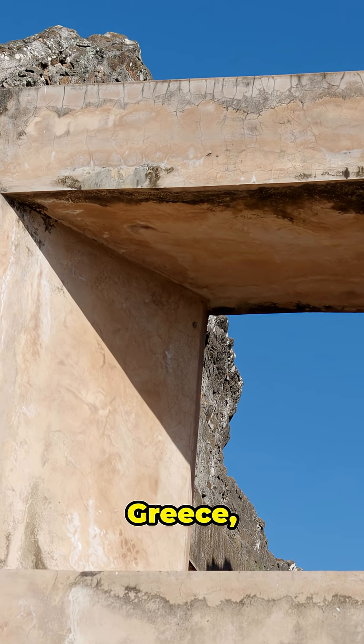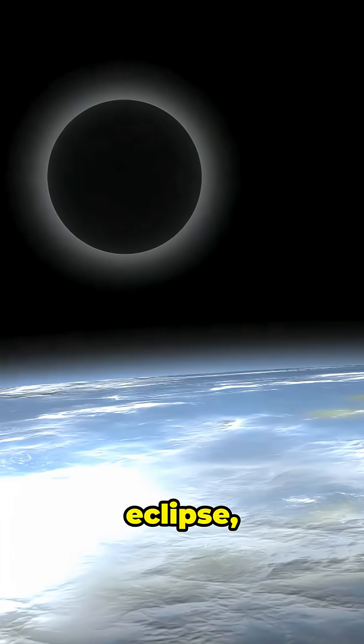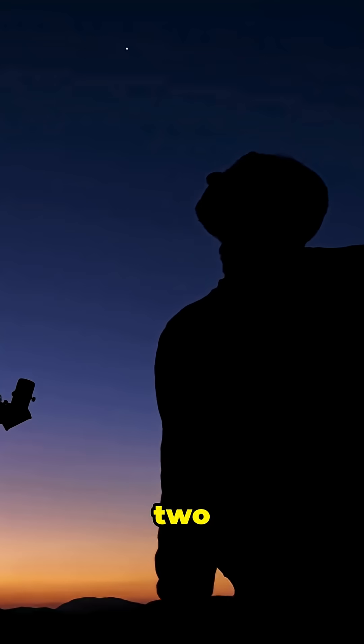Back in ancient Greece, eclipses showed that Earth was round, not flat. When the shadow curved during an eclipse, smart folks put two and two together.